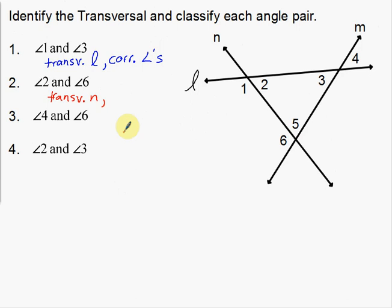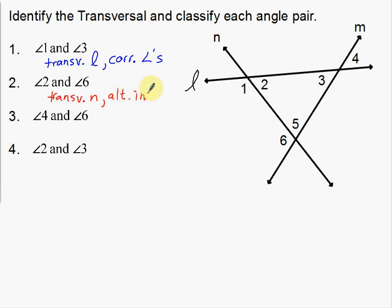Now I want to identify whether it's corresponding, alternate interior, alternate exterior, or same-side interior. The first thing I notice is that I have to cross over the transversal to get from angle to angle, so it's either alternate interior or alternate exterior. Lines L and M help to create two and six, and two and six are in between those two lines — that's the interior. They're on opposite sides of the transversal and on the interior, so these are alternate interior angles.